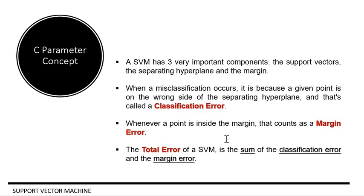A classification error occurs when one of the blue points, for example, is classified as the red. So one of the blue points lies on the other side of the hyperplane. So that leads us to a classification error.